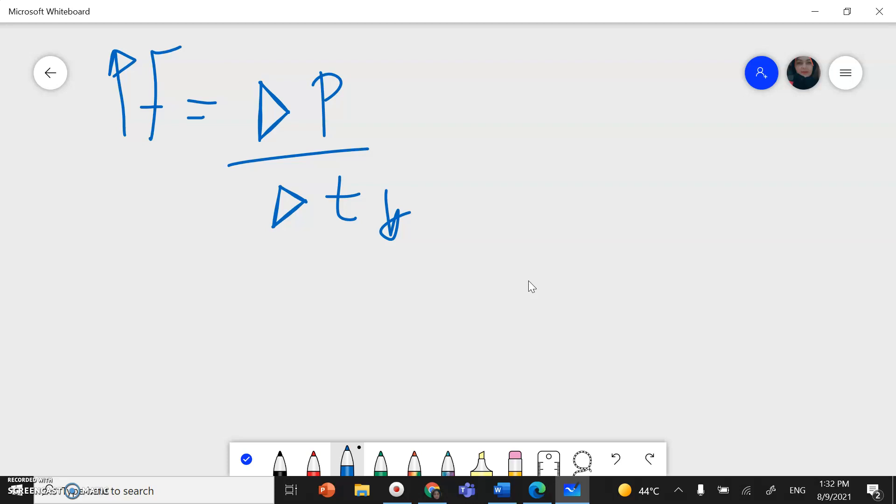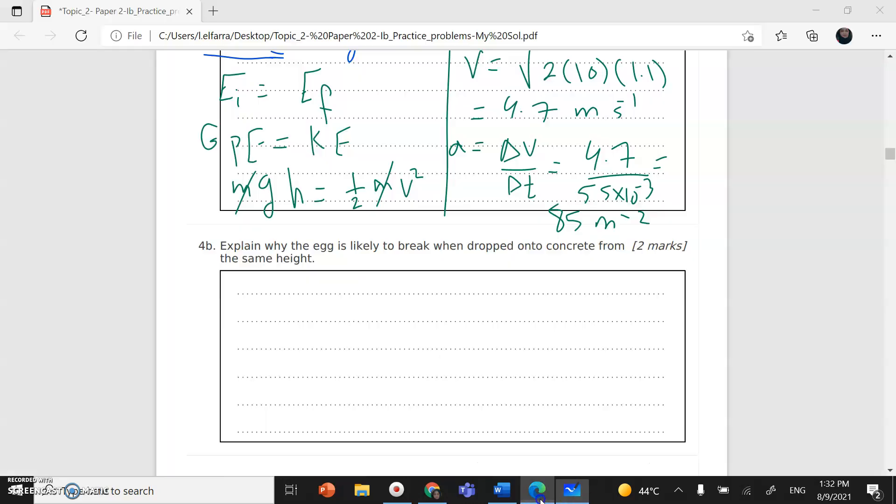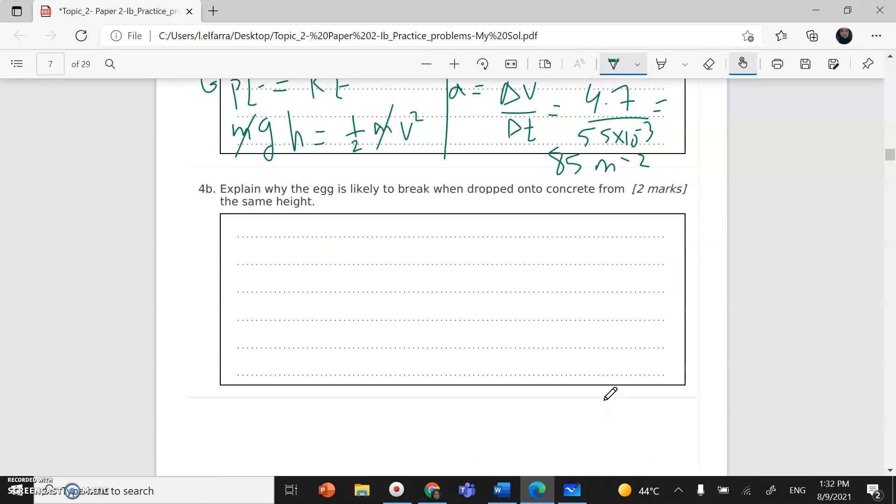Why? Because the change in momentum imparted on the egg, instead of happening instantaneously, will be delivered over the entire duration of the egg's contact with the mattress. So the egg will break on concrete because the time is instantaneous, the time is really short, so the force on the egg will be high.